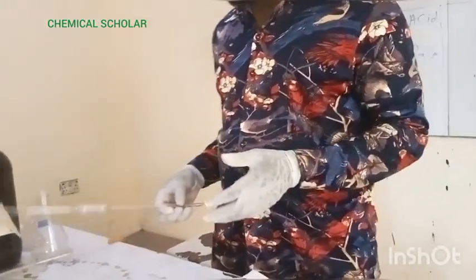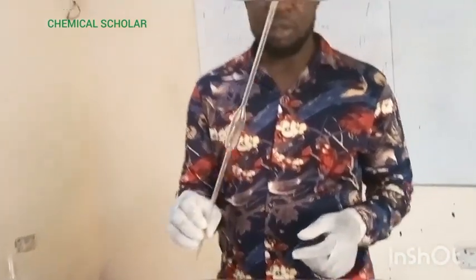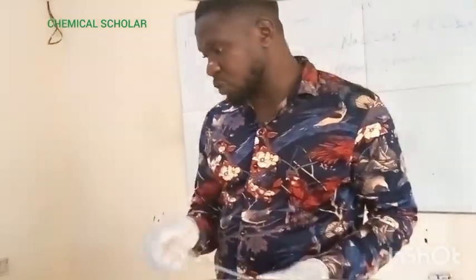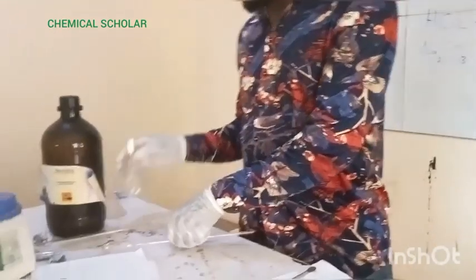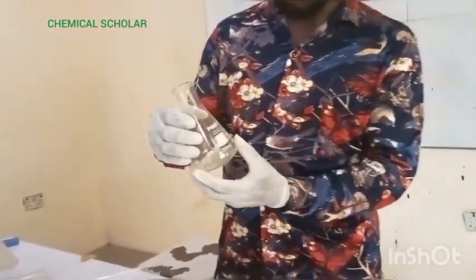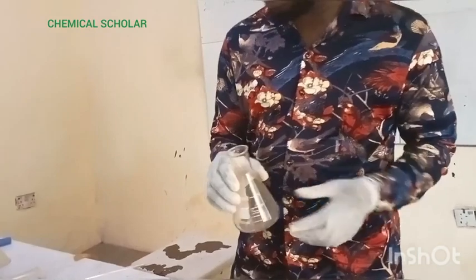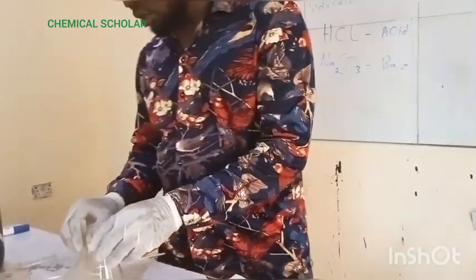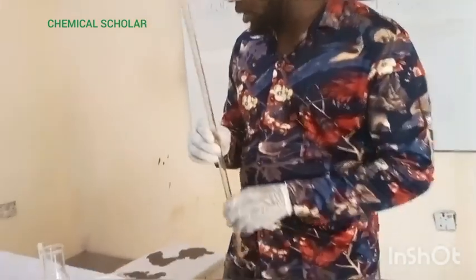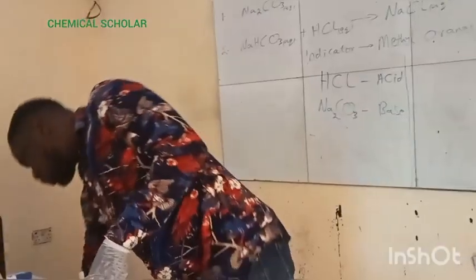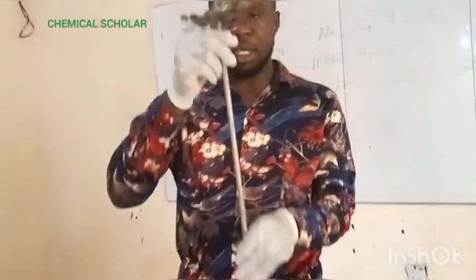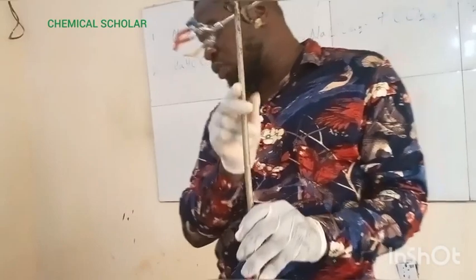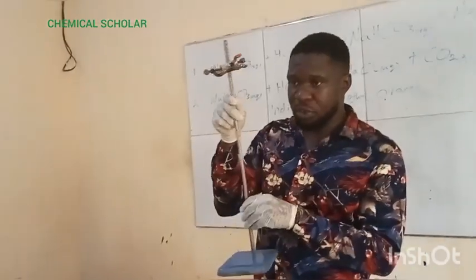There are other apparatus we are going to need, such as the pipette — this is a 25 cm³ pipette, that's what we are going to be using. Then you also need the beaker, and we also need this conical flask, and then we have the funnel here. These are some of the apparatus that we are going to use for this particular experiment.